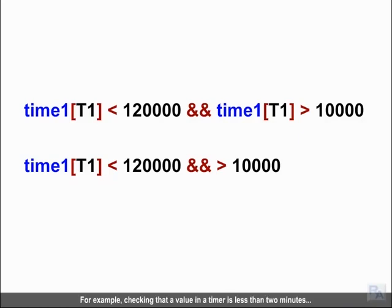For example, checking that a value in a timer is less than 2 minutes and greater than 10 seconds must be written as two complete conditions.